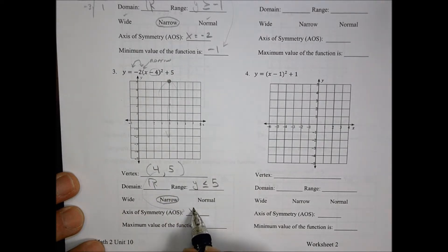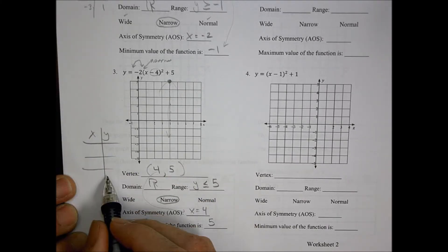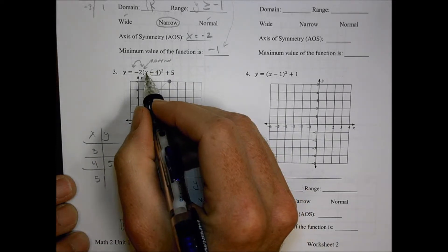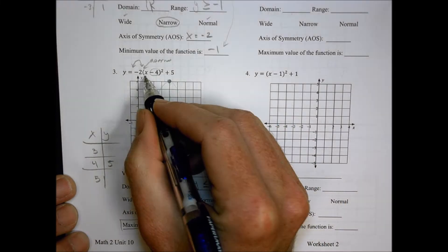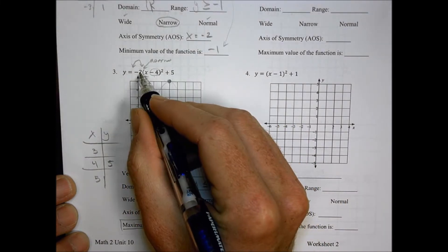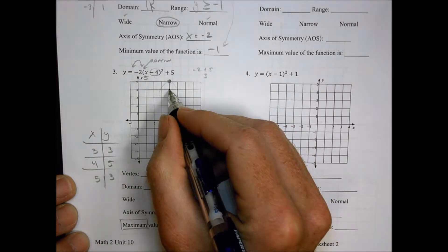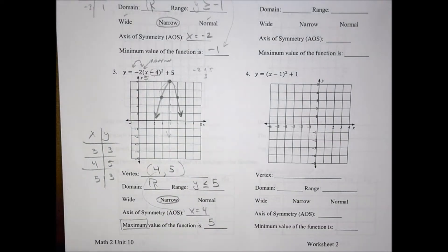The axis of symmetry comes off the vertex — that would be x equals four. And my maximum value, because it curves down and has a maximum, the high point is going to be five. To plot this, I'll use my vertex at (4, 5) and pick x equals five: five minus four is one, one squared is one, one times negative two is negative two, negative two plus five is three. So at x equals five, y equals three — and by symmetry, x equals three also gives y equals three. Now I have a couple of points to graph.